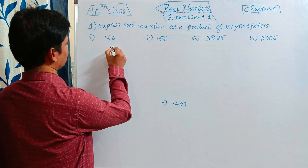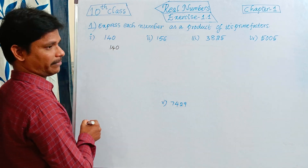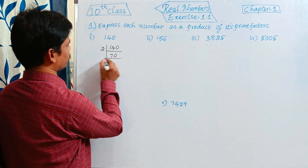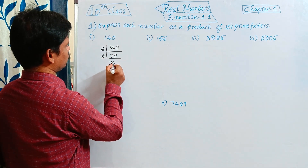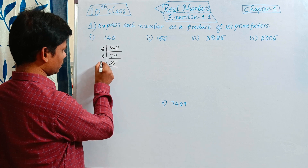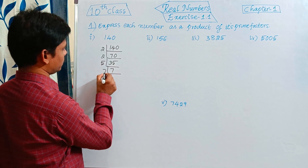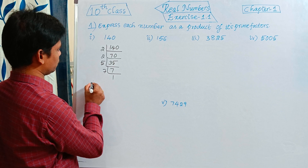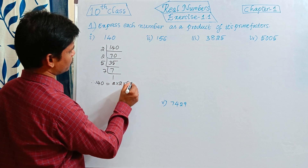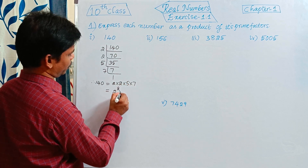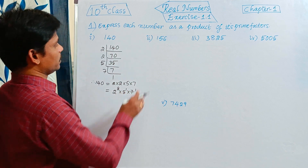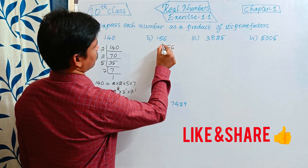The first number is 140. By the prime factorization method: 2 divides 140, then 2 divides 70, then 2 divides 35, then 5 divides 35 giving 7, then 7 divides 7 giving 1. Therefore, 140 is equal to 2 into 2 into 5 into 7, which is 2 squared into 5 power 1 into 7 power 1.